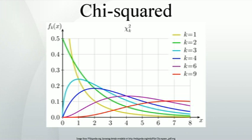When there is a need to contrast it with the central chi-squared distribution, this distribution is sometimes called the central chi-squared distribution. The chi-squared distribution is used in the common chi-squared tests for goodness of fit of an observed distribution to a theoretical one, the independence of two criteria of classification of qualitative data, and in confidence interval estimation for a population standard deviation of a normal distribution from a sample standard deviation. Many other statistical tests also use this distribution, like Friedman's analysis of variance by ranks.